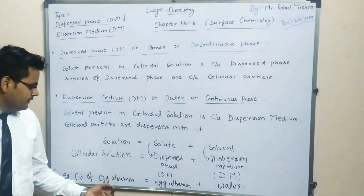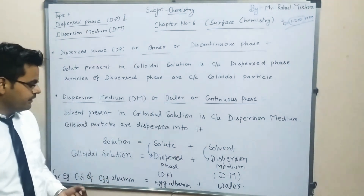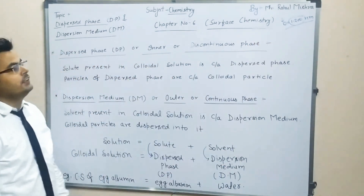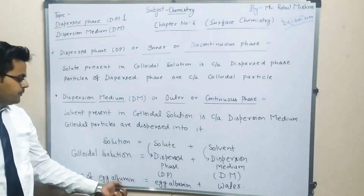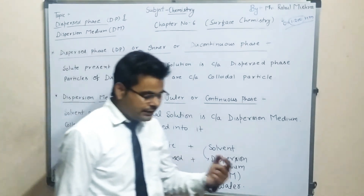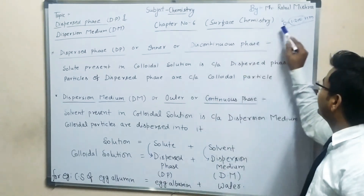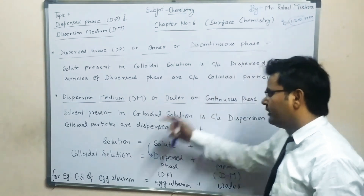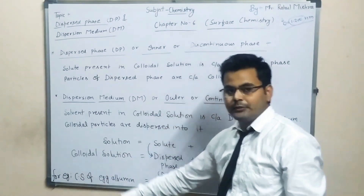We can say the particle size of egg albumin lies in between 1 to 200 nanometer. Therefore the solution of egg albumin is called as a colloidal solution, because the particle size of egg albumin comes in the range of 1 to 200 nanometer.